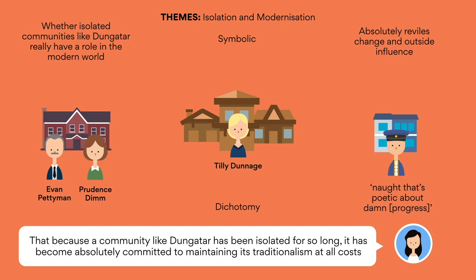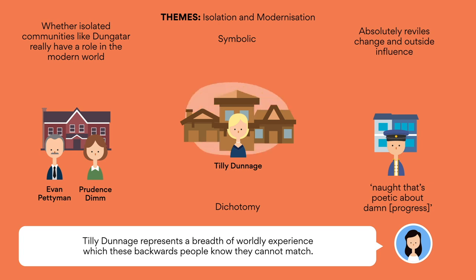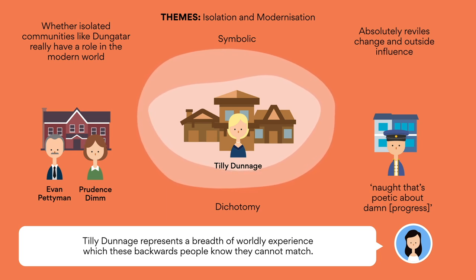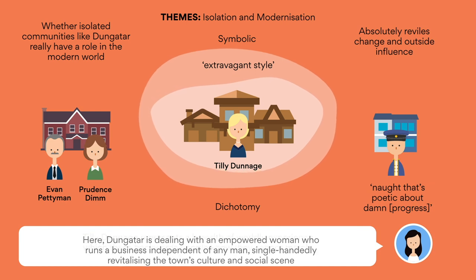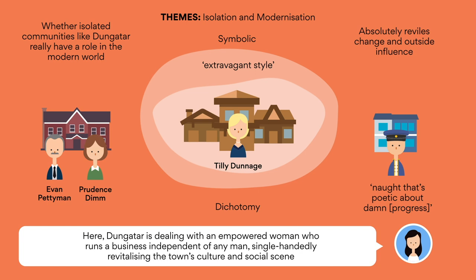This explains why Tilly's arrival was so terrifying for the townspeople. Fundamentally, Tilly Dunnage represents a breadth of worldly experience which these backwards people know they cannot match. It's important to remember that Tilly never actually antagonizes Dungatar's townspeople, but rather that it's her mere presence that they find so disturbing. Tilly and her extravagant style is not solely a threat because it changes the fashion scene in Dungatar, but also because of its symbolism. Here, Dungatar is dealing with an empowered woman who runs a business independent of any man, single-handedly revitalizing the town's culture and social scene. You would think that Dungatar would be broadly thankful, or at least tolerate Tilly's presence because of the benefits she brings to town, but unfortunately not.